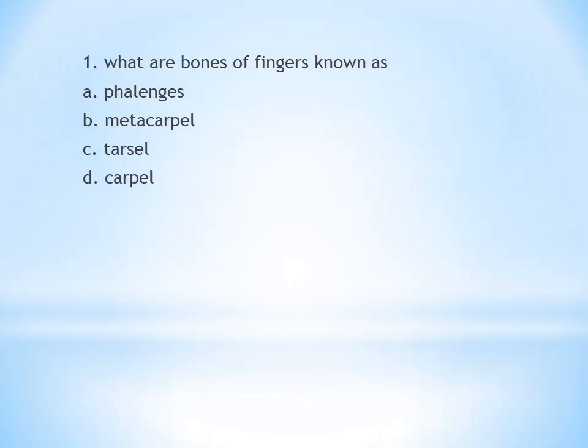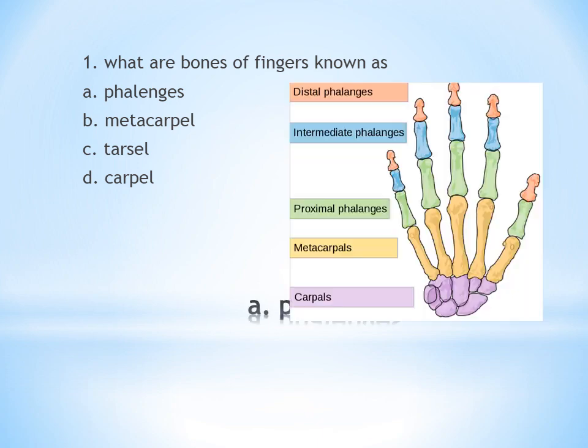First question: What are bones of fingers known as? A. Phalanges, B. Metacarpal, C. Tarsal, D. Carpal. The finger bones name is phalanges. Answer is A. Finger bones are called phalanges — proximal, intermediate, and distal phalanges.